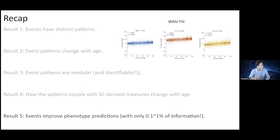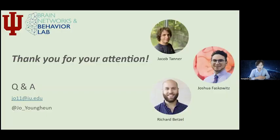However, the results from other regions were more heterogeneous, and these results suggest that the relationship between events and structural connectivity is heterogeneous and dependent on the event type. Lastly, we demonstrated that events improve phenotype predictions compared to non-events. This is only using as little as 0.1 and maximally up to 1% of temporal information used in creating functional connectivity matrices. These results demonstrate that different event patterns can be useful for predicting different phenotypes, which warrants further investigation to the available NKI phenotype data that we have in hand. Thank you for your attention and the opportunity to present our latest findings. These are my collaborators, Jake Tanner, Josh Faskowitz, and Rick Betzel. If you have any questions, I'd be happy to answer them.